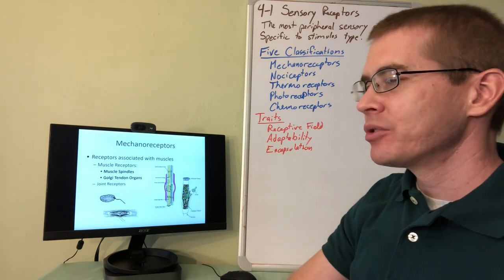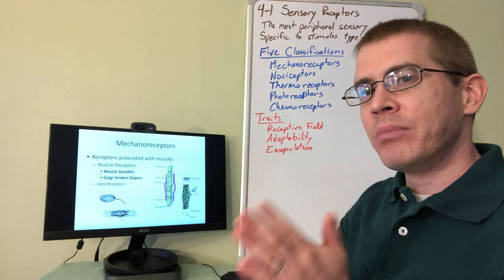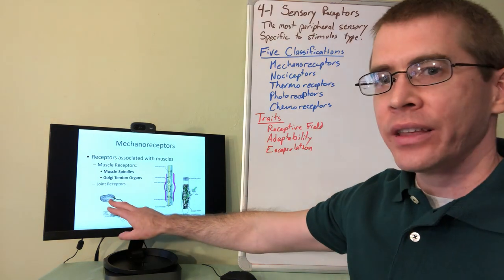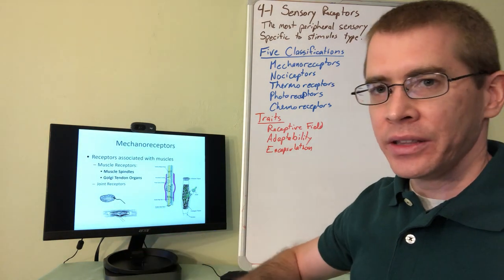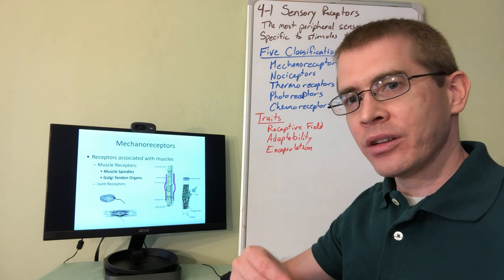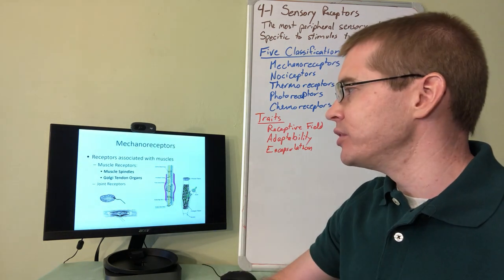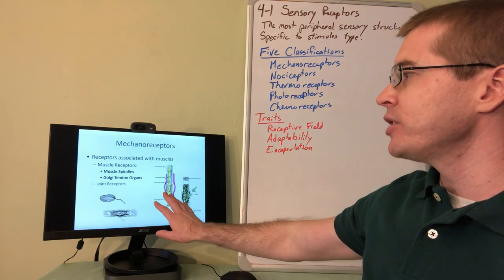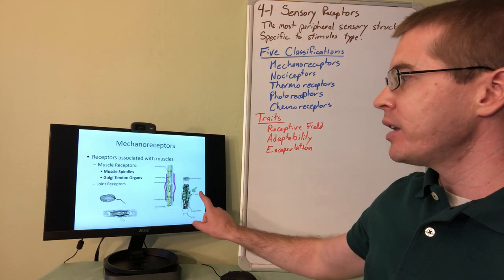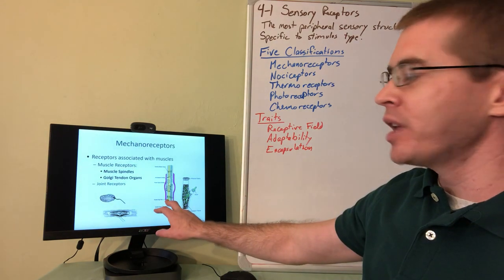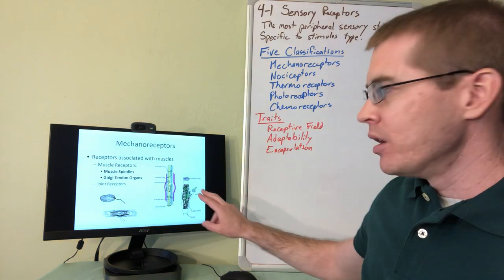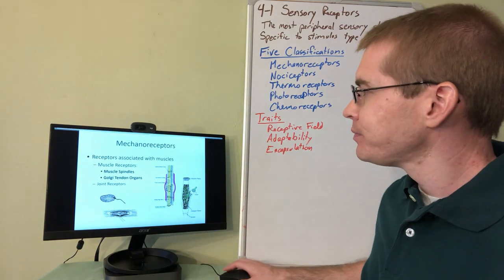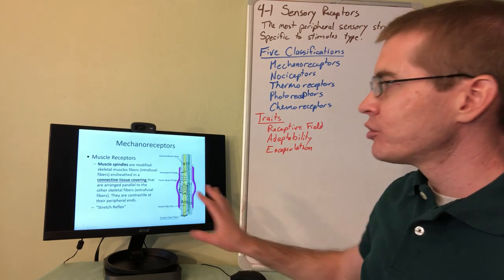We also have mechanoreceptors associated with muscles and joints. Joint receptors are analogous to Pacinian corpuscles and Ruffini endings but located within the cartilage and structures of the joints. Muscle receptors are particularly interesting — specialized structures called muscle spindles and Golgi tendon organs. Muscle spindles are embedded within the muscle bellies; Golgi tendon organs are located within the tendon attaching muscle bellies to bone.